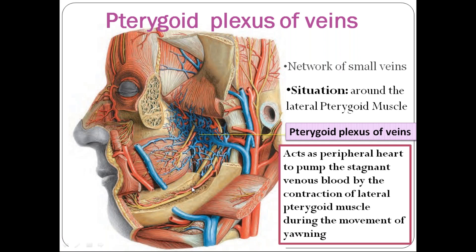How does it act as a peripheral heart? Whenever you yawn — say if you are feeling bored, you will yawn. At that moment, the lateral pterygoid muscle contracts as you depress the mandible. The blood which is stagnant in this area gets pumped to the other veins. This is how it acts as a peripheral heart.